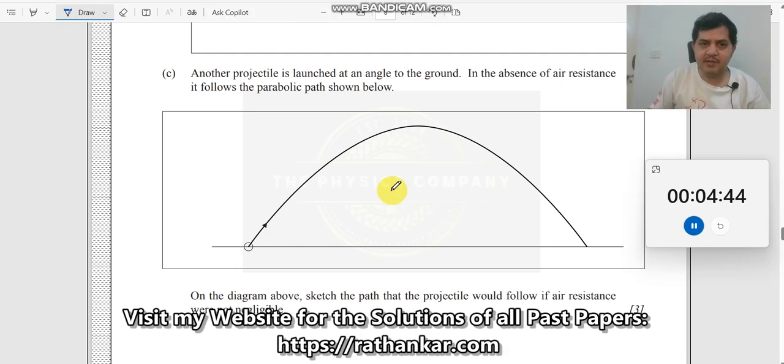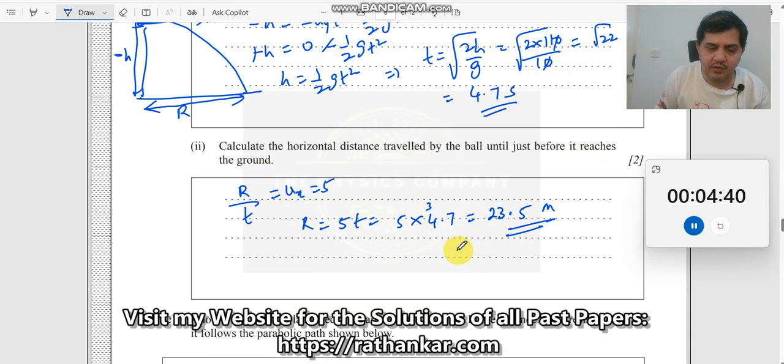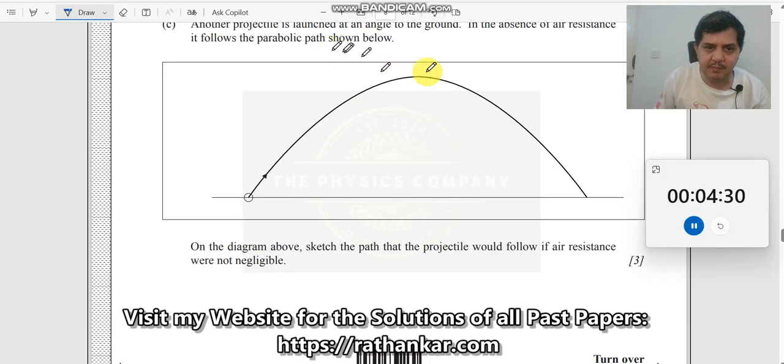Thus the answer is 23.5 meters. Then the next one: another projectile is launched at an angle to the ground. How many marks is this? Two marks. One mark will go here, the other mark will go here. Another projectile is launched at an angle to the ground. In absence of air resistance, it follows the parabolic path shown below.